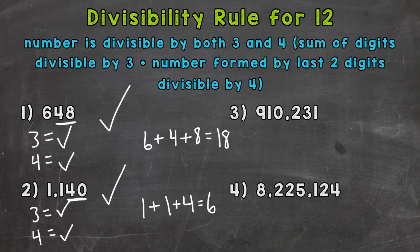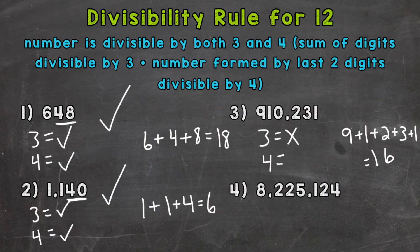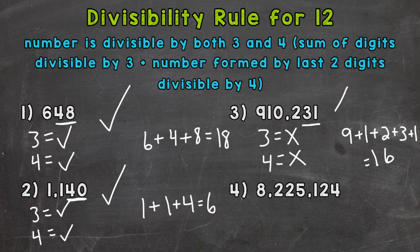On to number 3, we have 910,231. We'll check 3 and 4. Let's add our digits: 9 plus 1 is 10, plus 2 is 12, plus 3 is 15, plus 1 is 16. 16 is not divisible by 3, therefore 910,231 is not divisible by 3 — we get an x there. Let's see if it's divisible by 4 though. The last two digits form 31, which is not divisible by 4, therefore the original number is not divisible by 4 either. So 910,231 isn't divisible by 3 or 4, and it had to be divisible by both in order to be divisible by 12 — so number 3 is not divisible by 12.